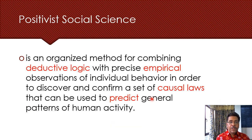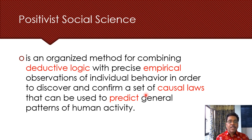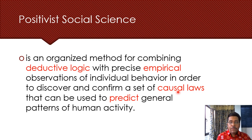Positivist social science is an organized method for combining deductive logic with precise empirical observation — through experiments or surveys — to discover a set of causal universal laws that can be used to predict general patterns of human activity. It depends on precise empirical observations, and the idea is to discover and confirm a set of causal laws — A causes B — so that we can use these laws to predict human activity in future. This is one way of replicating the basic sciences.